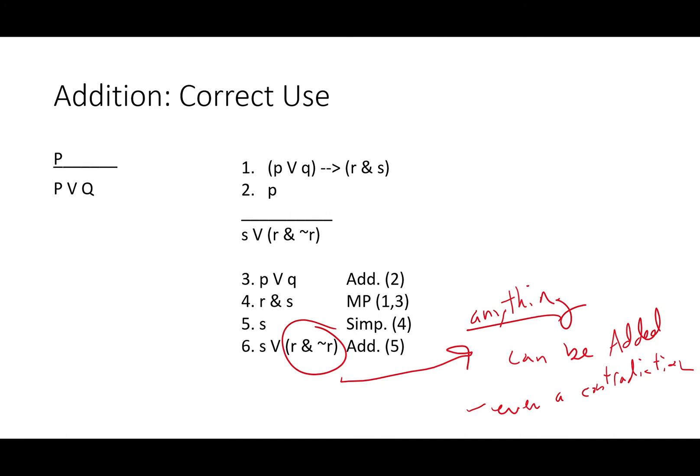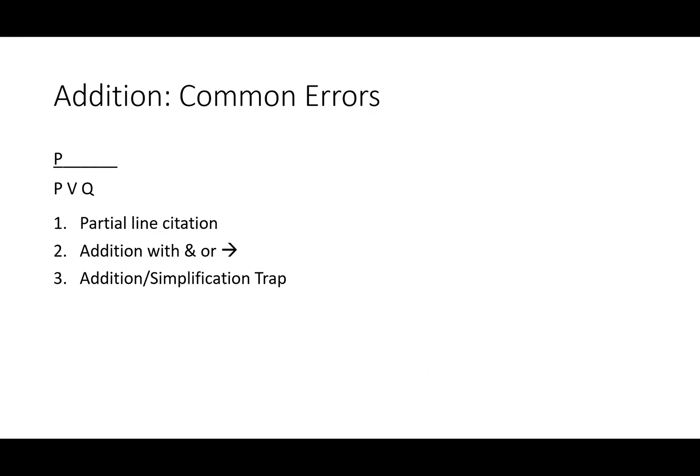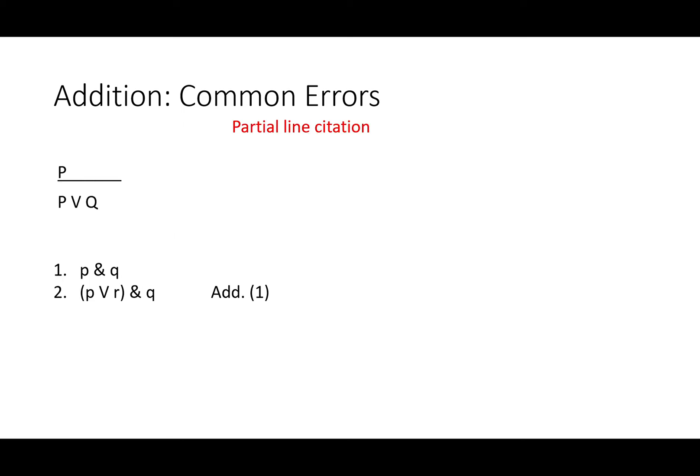You can add literally anything, even a contradiction, with addition. Because addition is so powerful and allows you to introduce, in a limited way, things that are definitely not true, there's some very important errors to avoid. First, citing just a partial line. Second, adding with ampersand or arrow. And third, what I call the addition simplification trap. First of all, a partial line citation: you might be tempted to go from P and Q to either P or R and Q. That's actually a valid inference, but it's not an addition.